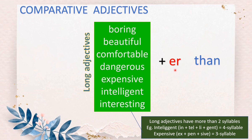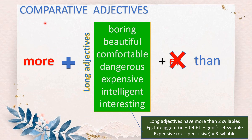When we have long adjectives, do we need to put -ER? When it comes to long adjectives, you cannot put -ER. You have to remove the -ER. The word 'than' you still keep. Instead of -ER, you have to use 'more'. You use 'more' before the long adjective. So you have: more boring than, more beautiful than, more comfortable than, more dangerous than, more expensive than, more intelligent than, more interesting than. You use the word 'more' to make it comparative.